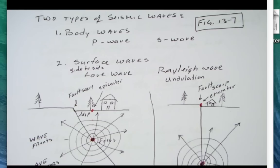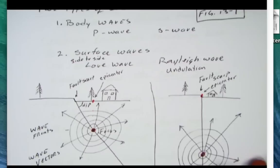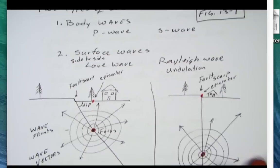The 2007 Alum Rock earthquake that occurred here in the Bay Area, there was a strong Rayleigh wave associated with that. You felt like you were on a boat.